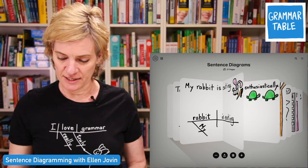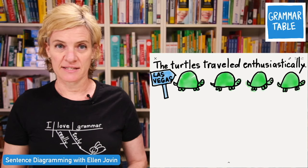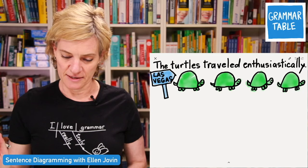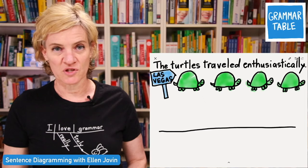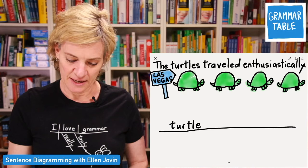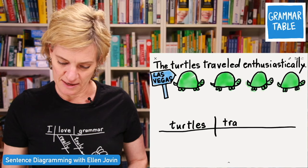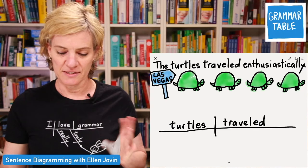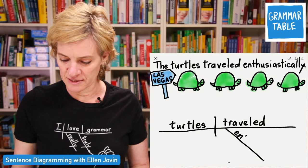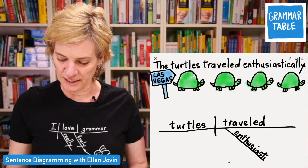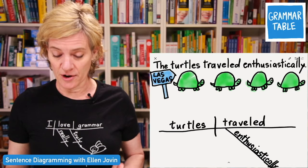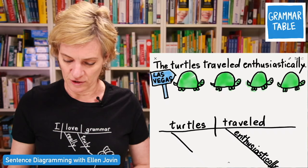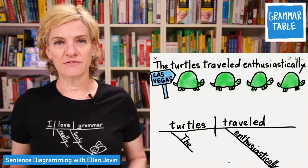Here we have 'the turtles traveled enthusiastically.' The word enthusiastically is an element we haven't talked about yet. Many words that end in -ly are adverbs, and we have a different system for that. The subject is turtles — stick it on the left — and the verb is traveled. The adverb enthusiastically tells you how the turtles traveled, so it goes underneath the verb, just as the adjective went under the noun. The article 'the' is all about the turtle, so that goes below the subject. And now we have completed our next diagram.